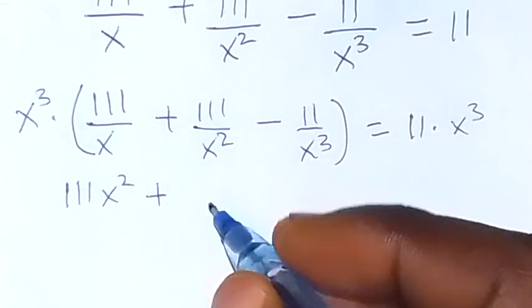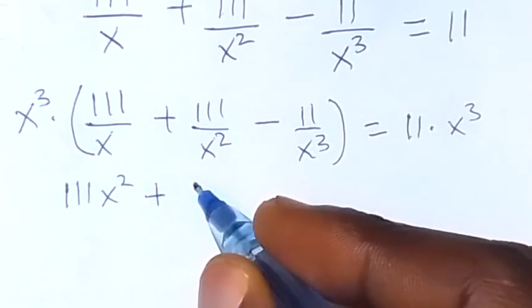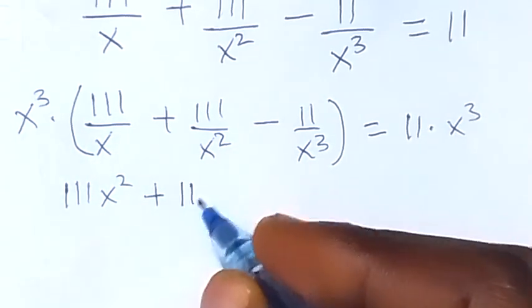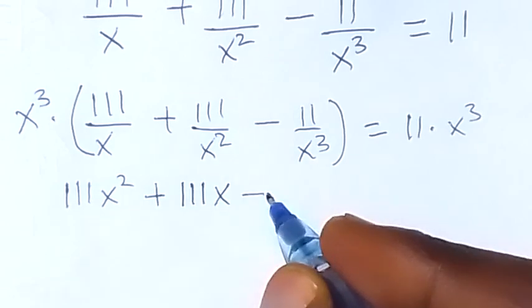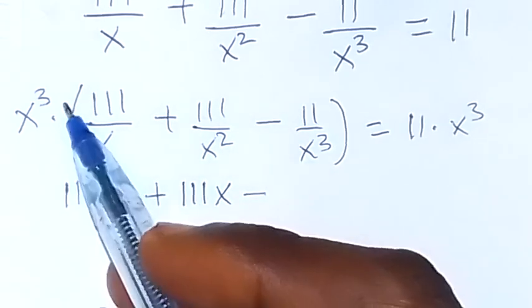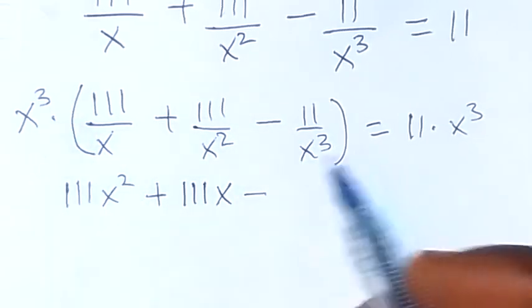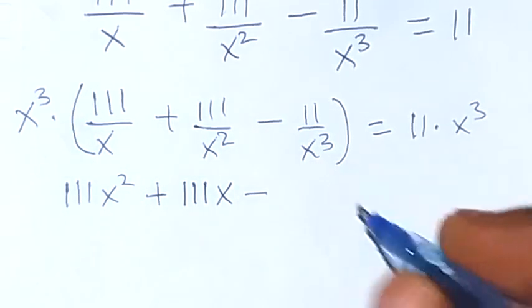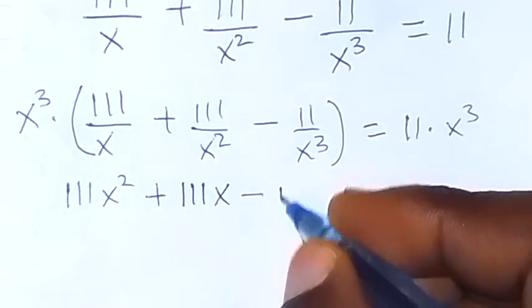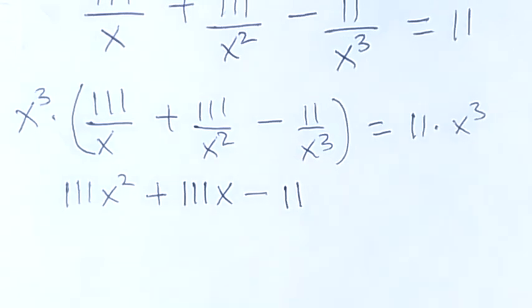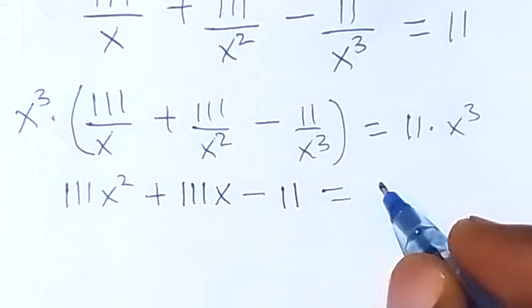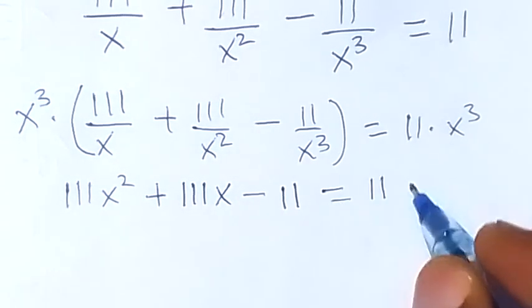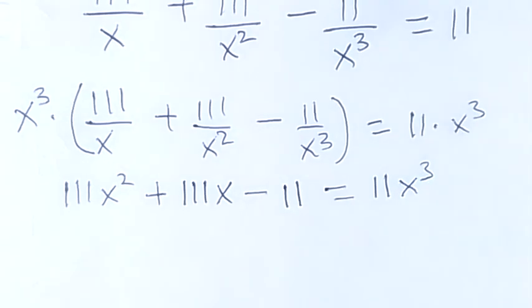We are going to have x, then minus x raised to power 3 cancels x raised to power 3, giving us minus 1, which is equal to 11x raised to power 3.